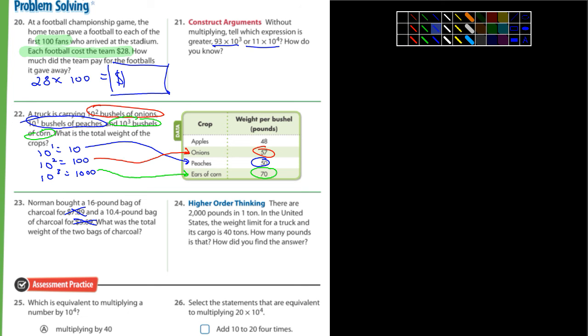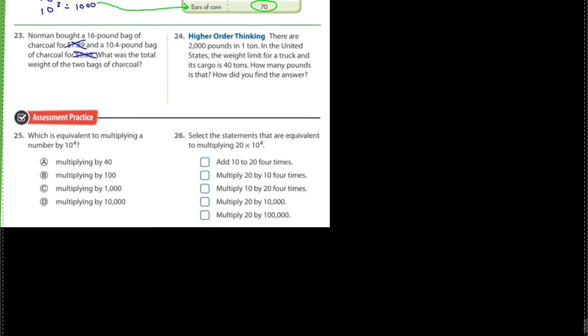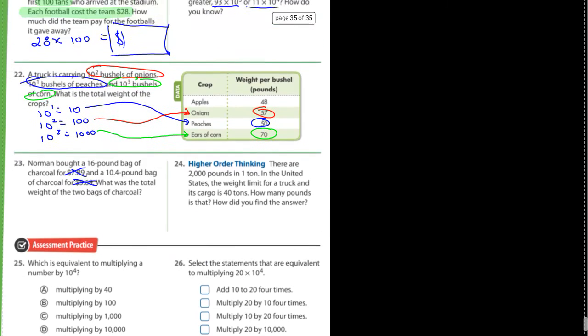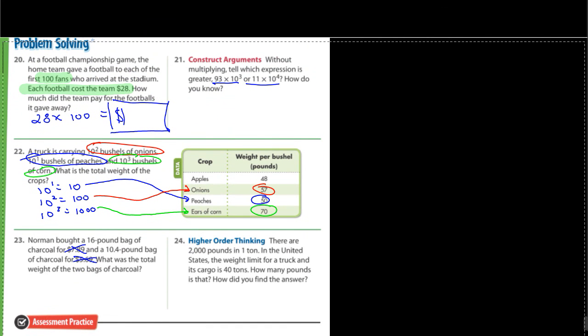Number 24, there are 2,000 pounds in one ton. 40 tons, how many pounds is that? You guys can answer 24, and then 25, 26 you guys should be able to do. Okay, that's it. I'm going to end this video. Look at that, almost kept it under 15 minutes.